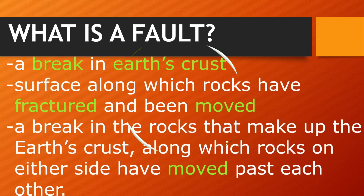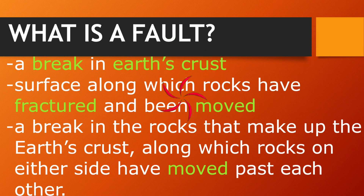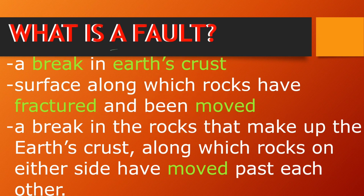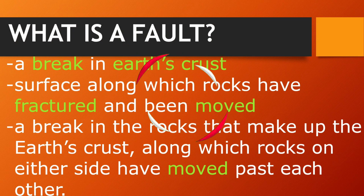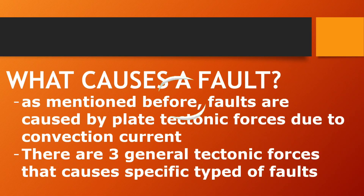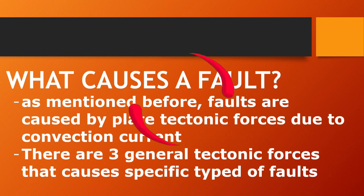We can now define fault. What is a fault? A fault is a break in the earth's crust — a surface along which rocks have fractured and been moved. Fault is a break in the rocks that make up the earth's crust, along which rock on either side have moved past each other. What causes fault? Faults are caused by plate tectonic force due to convection current.